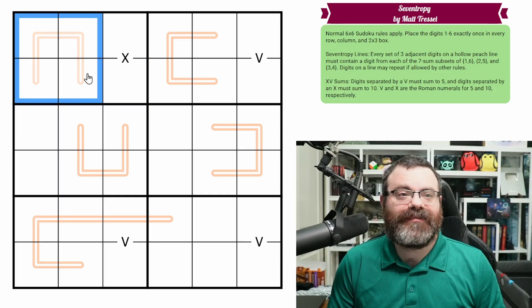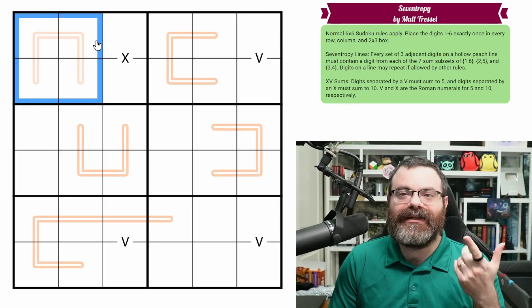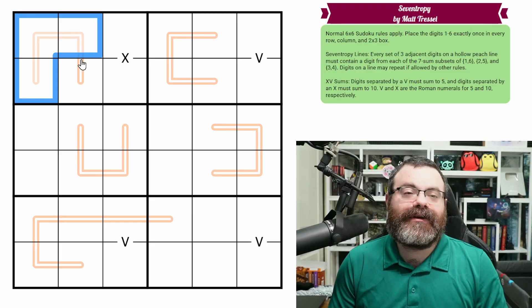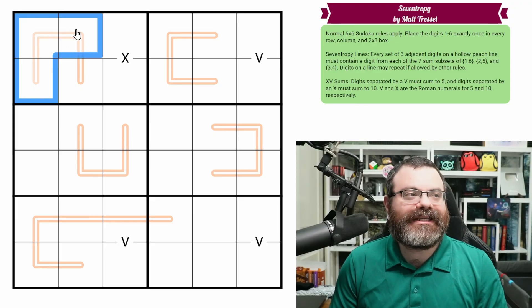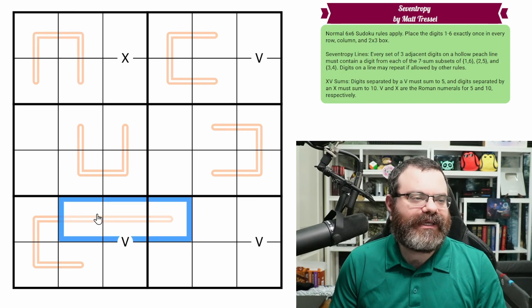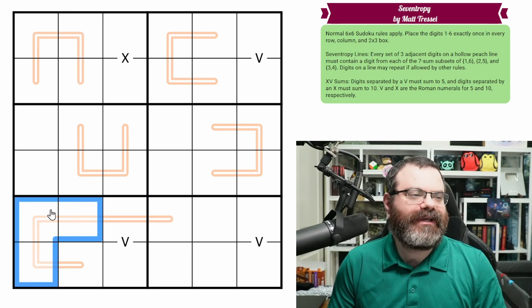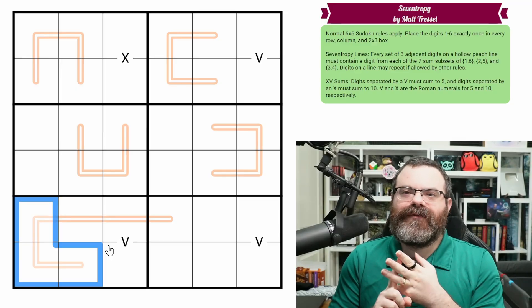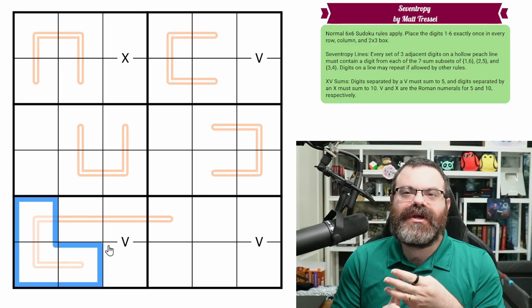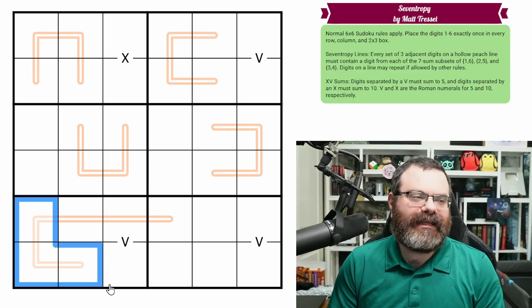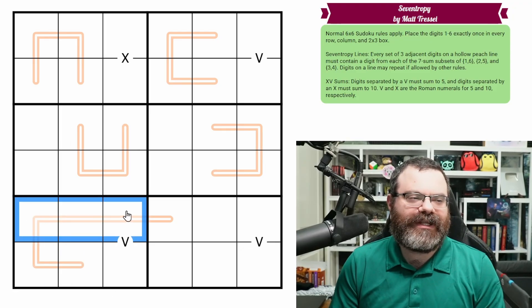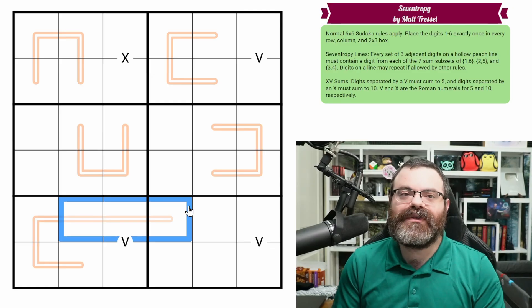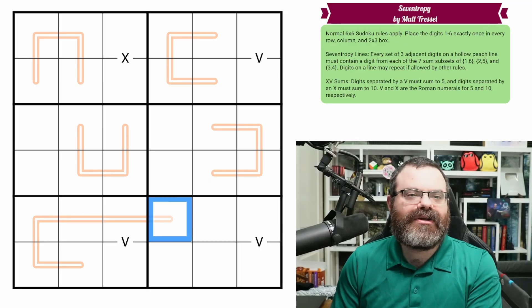We also have these 7Trippy lines. It's like entropic lines or modular lines if you've done those before. It's the same concept, it's just the groupings are different. So in this case, every 3 adjacent digits on a line have 1 of each from a group. So there's 3 groups and we need 1 of each in every 3. In this case, the groups are the digits that add to 7. So 1 and 6, 2 and 5, and 3 and 4 are 3 groups.